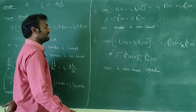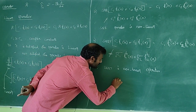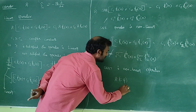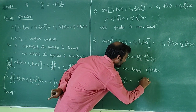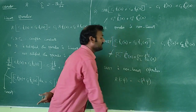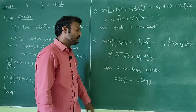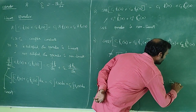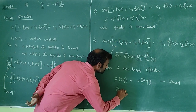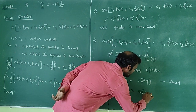There is another condition for linearity: if A-cap(c·ψ) equals c·A-cap(ψ), where c is a complex constant, then the operator is called linear. If this condition is not satisfied, the operator is non-linear.